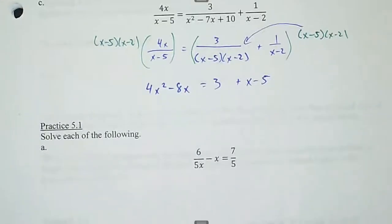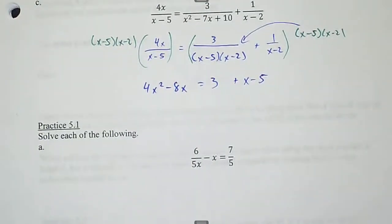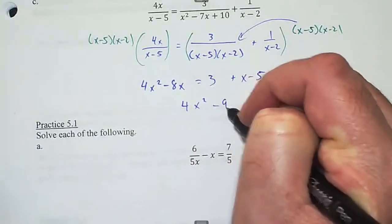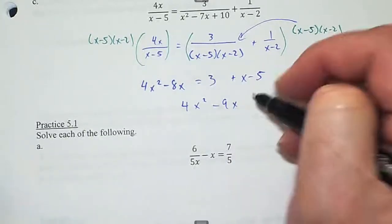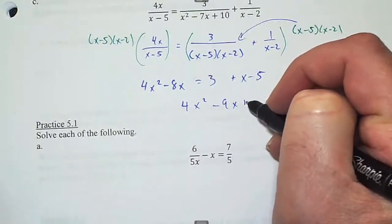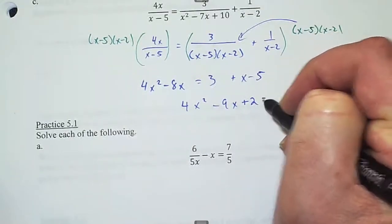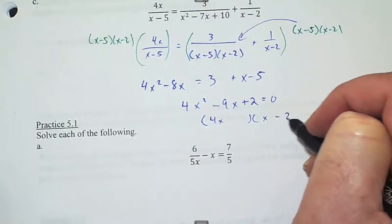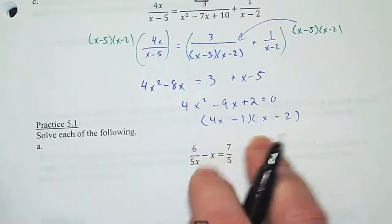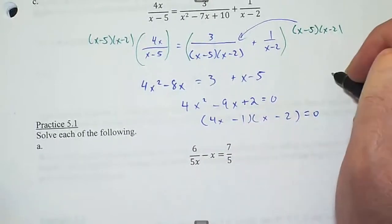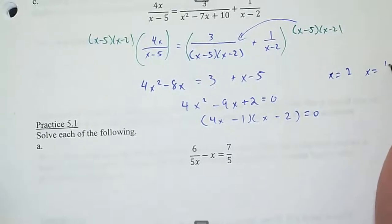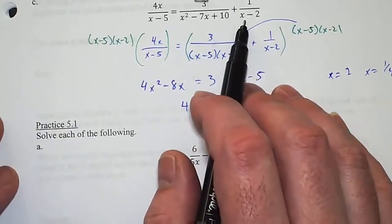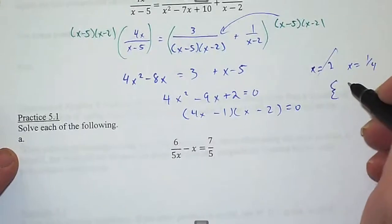The (x − 2)'s cancel and 1 times (x − 5) is just x − 5. I've got an x squared so I set it equal to zero. That gives 4x² − 9x + 2, which factors as (4x − 1)(x − 2), giving x = 2 and x = 1/4. However, x = 2 makes that denominator zero — it's extraneous. We do have one solution: x = 1/4.